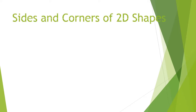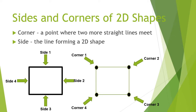Now children, let us learn what are sides and corners in two-dimensional shapes. First we will understand what are corners. You can see in this figure that a point where two lines are meeting is a corner. The highlighted dots in the figure represent corners. Let's count the corners in the given figure: corner 1, corner 2, corner 3, and corner 4. So there are four corners in this figure.